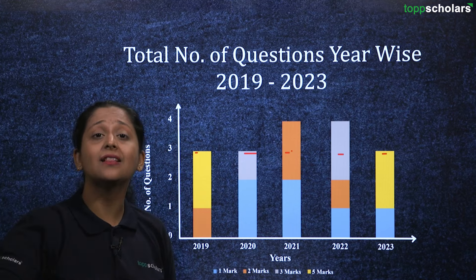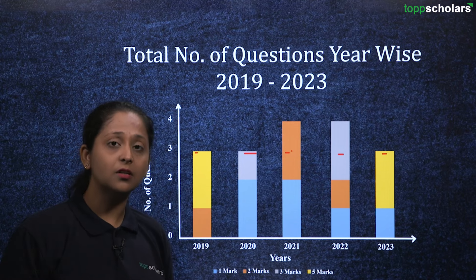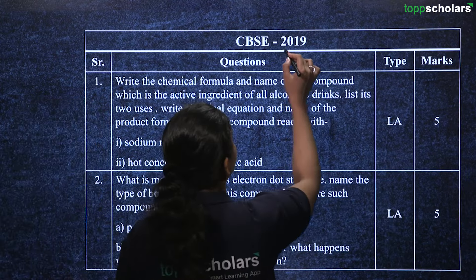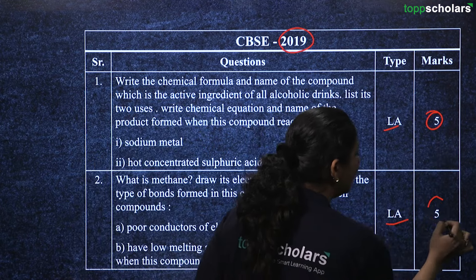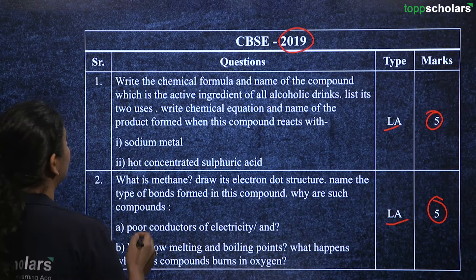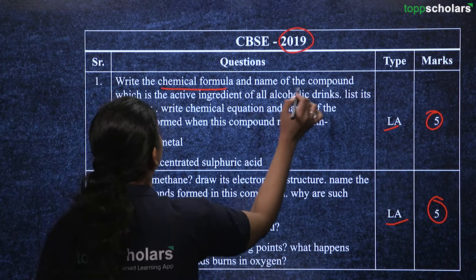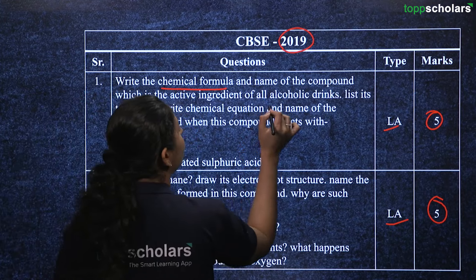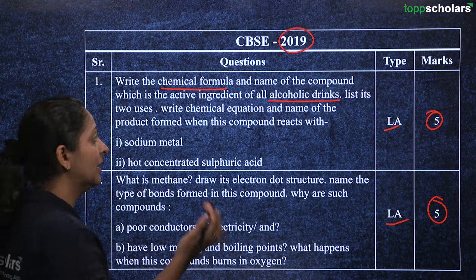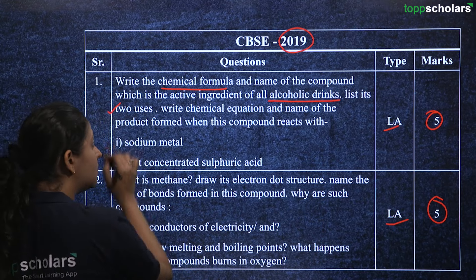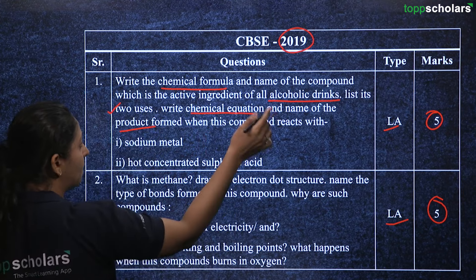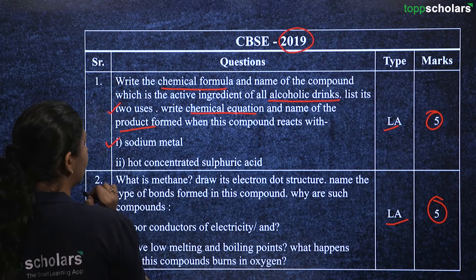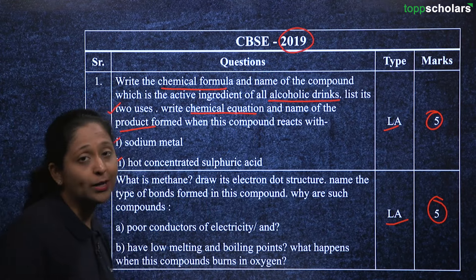We will first look at questions from the last five years and then answer a few. This is a question from 2019 — both are long answer questions holding five marks. You have to write the chemical formula and name the compound which is the active ingredient of alcoholic drinks, list its two uses, and write the chemical equation when this compound reacts with sodium metal and hot concentrated sulfuric acid.